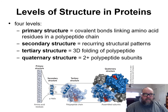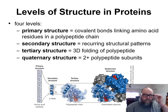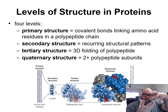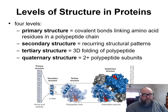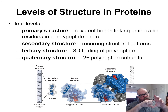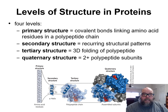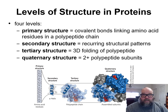Tertiary structure is what your textbook refers to as 3D folding. It's nothing more than the sequence of alpha helix, beta sheet, loops — they start to push and pull against each other, holding themselves together to form a polypeptide: alpha helix, loop, beta sheet, loop, beta sheet, loop, alpha helix, and so on. This is where the R groups — ionic, hydrophobic, hydrophilic — come into play to hold that polypeptide's tertiary structure together.